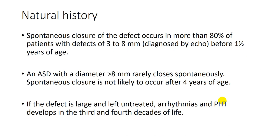The natural history of ASD includes spontaneous closure, which occurs in more than 80% of patients with defects of 3 to 8 mm before one and a half years of age. If the defect is less than 3 mm, it will close. If 3 to 8 mm, there is an 80% chance of closure. If more than 8 mm, it rarely closes spontaneously — it may decrease in size. If the defect is large and left untreated, arrhythmia and pulmonary hypertension may develop in the third or fourth decades of life.